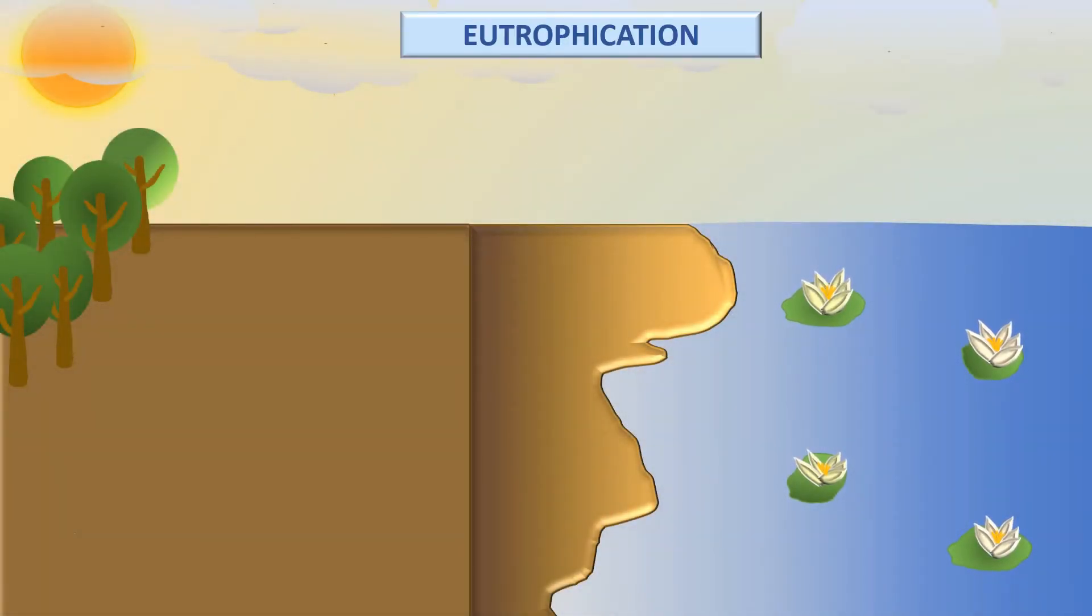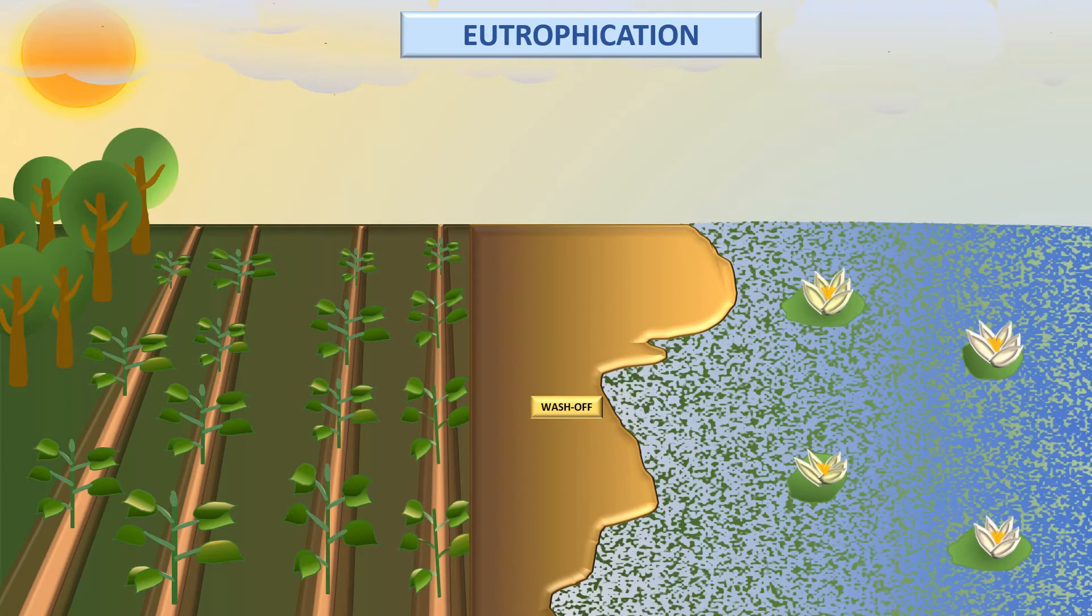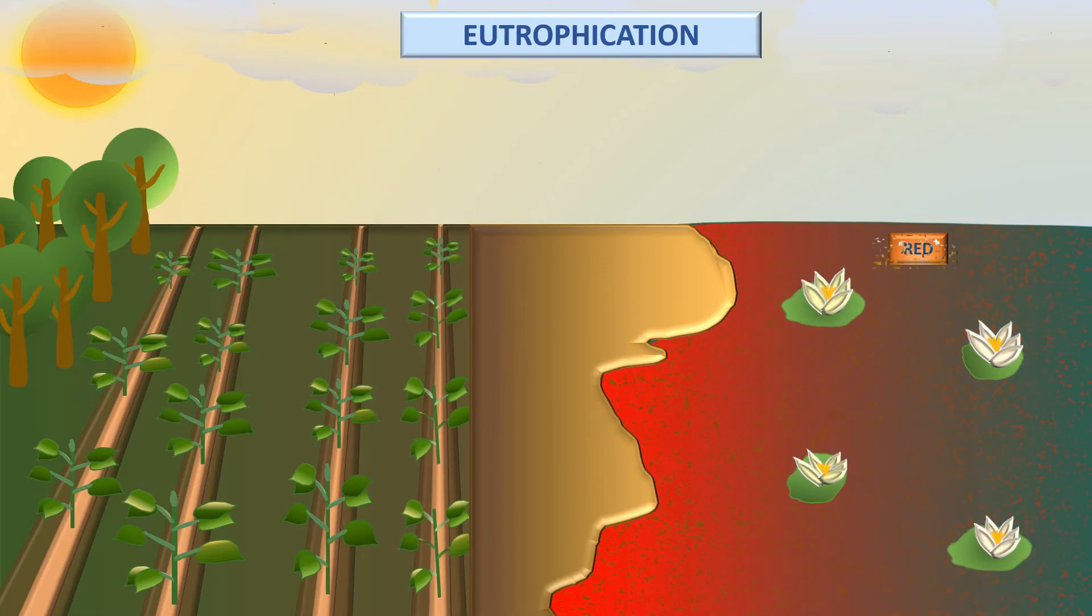Eutrophication occurs when nutrients coming from areas such as lawns or agricultural farms wash off into bodies of water, leading to rapid growth of algae. The color of these algae can be green, blue-green, red, and even brown depending on the type of algae.